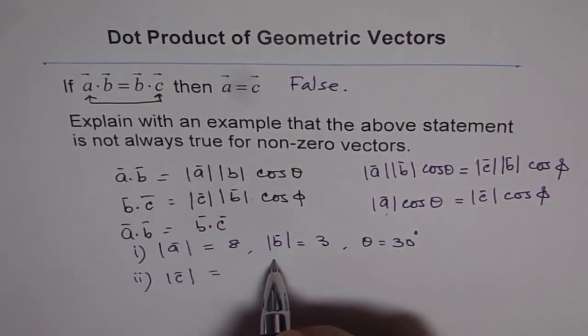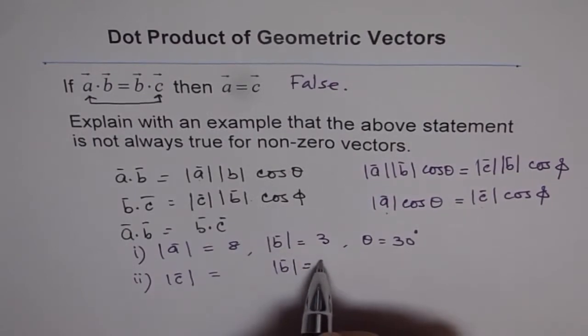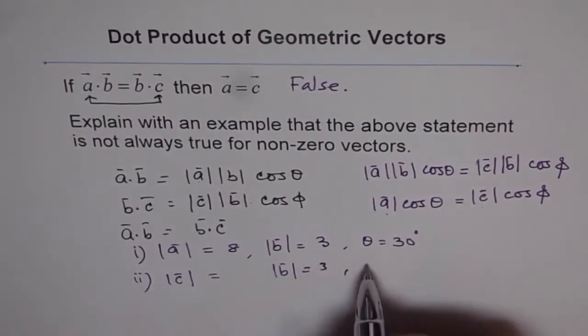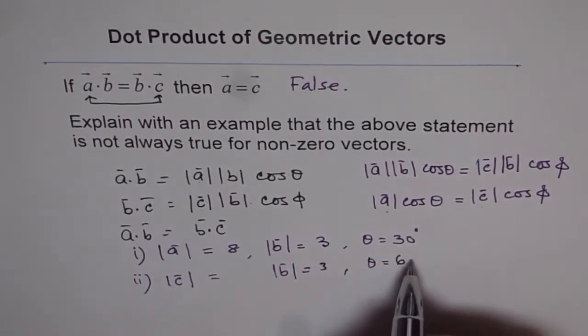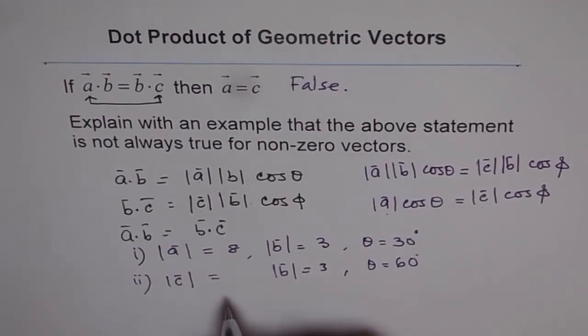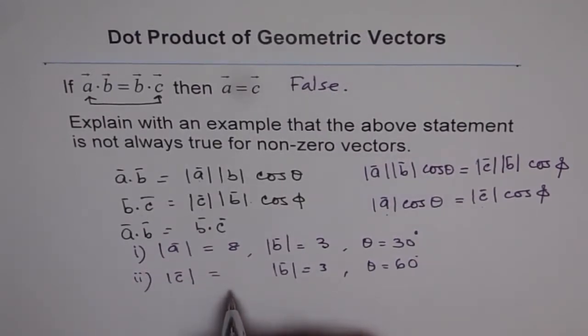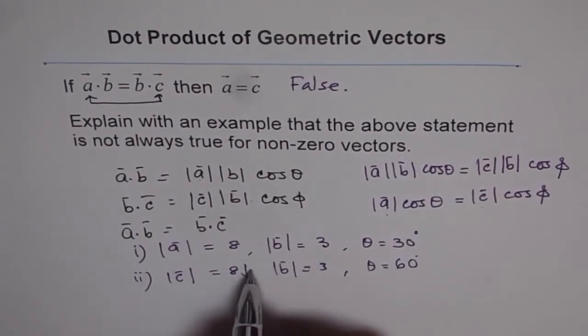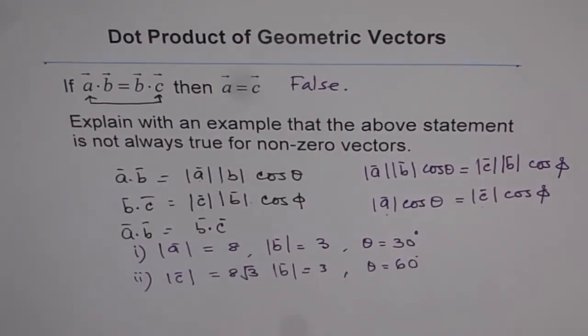And let C be, let me write B first. B will be same, we want that to be 3, that is magnitude. And let's change the angle from 30 to 60 degrees. And here, we can take magnitude of C as 8 square root 3. Do you understand?